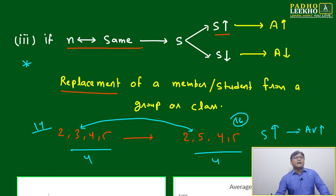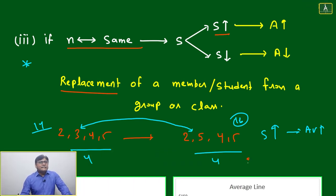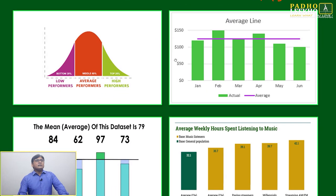Another situation: if you are replacing the three with one, then what is happening here? Five plus four is nine, it is becoming ten. Earlier it was twelve, now sum has decreased. If sum has decreased, average will decrease.